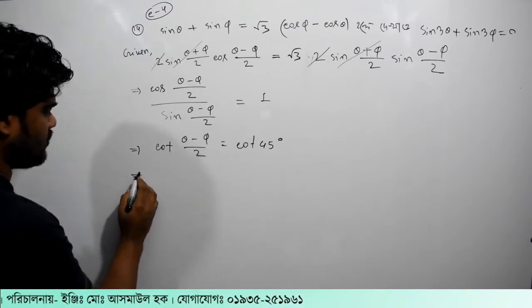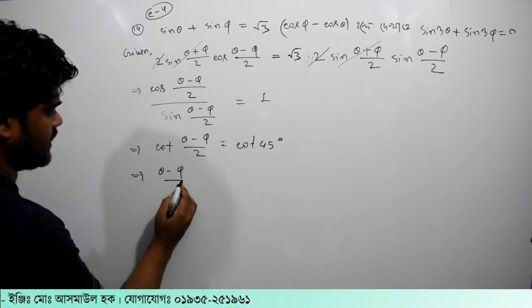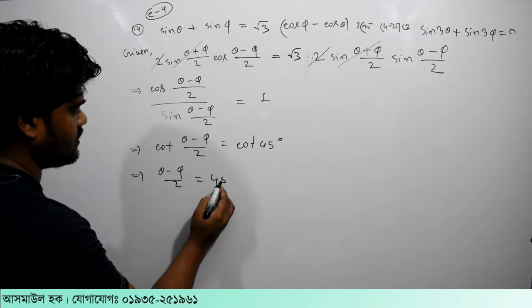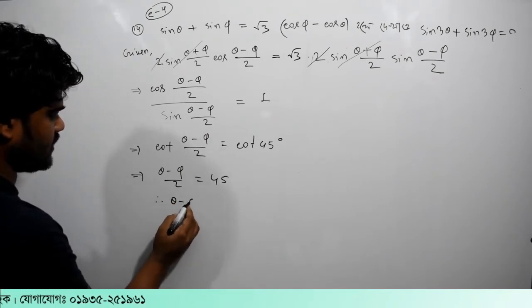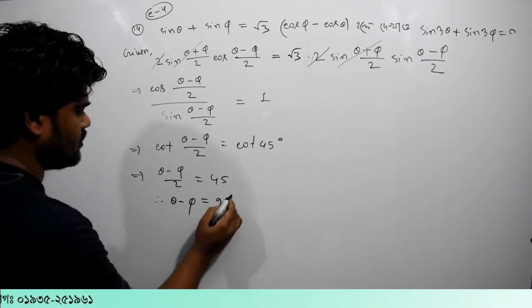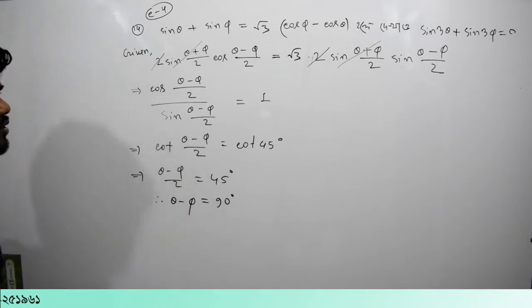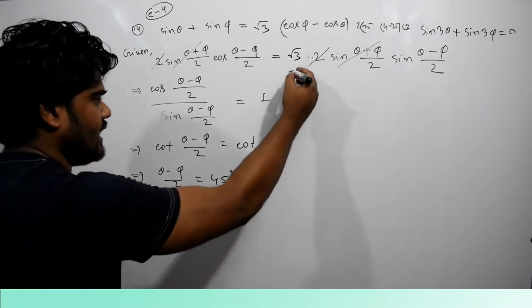Now cos (theta minus phi)/2 equal to 40, or cos (theta minus phi) equal to 90 degrees. So theta is equal to 90.